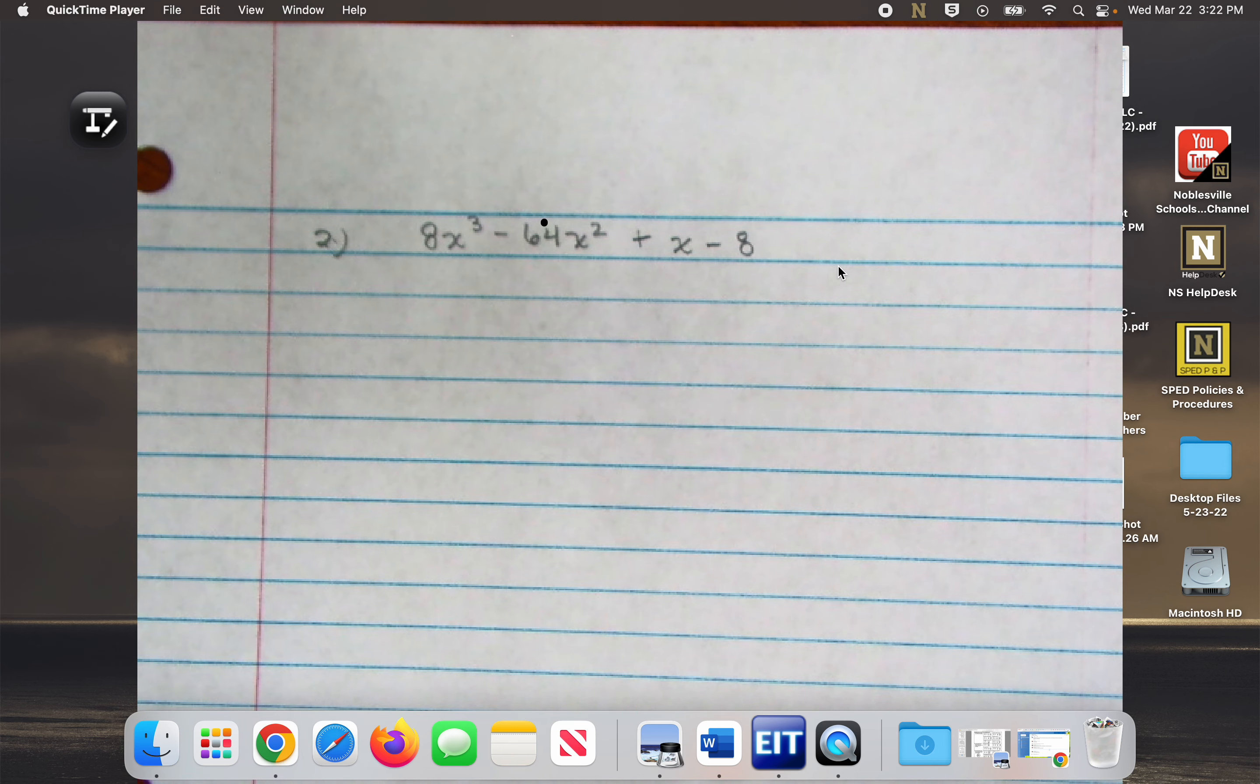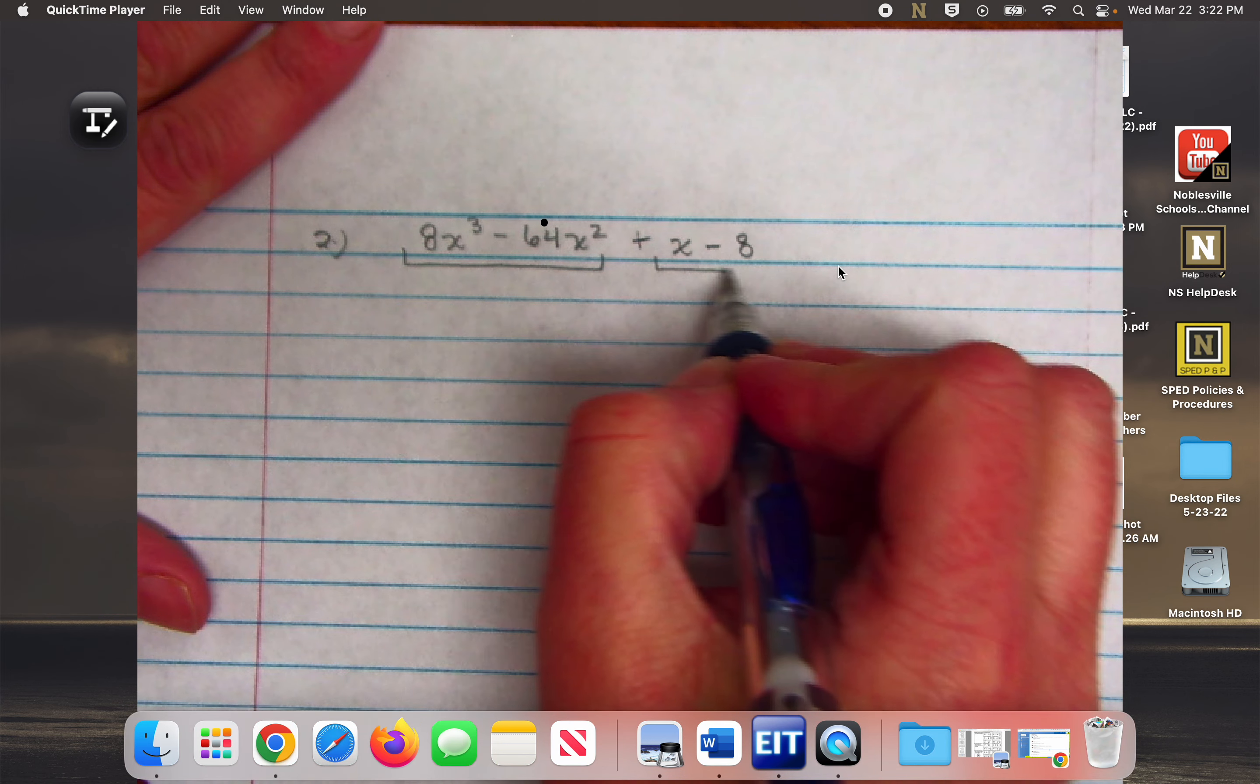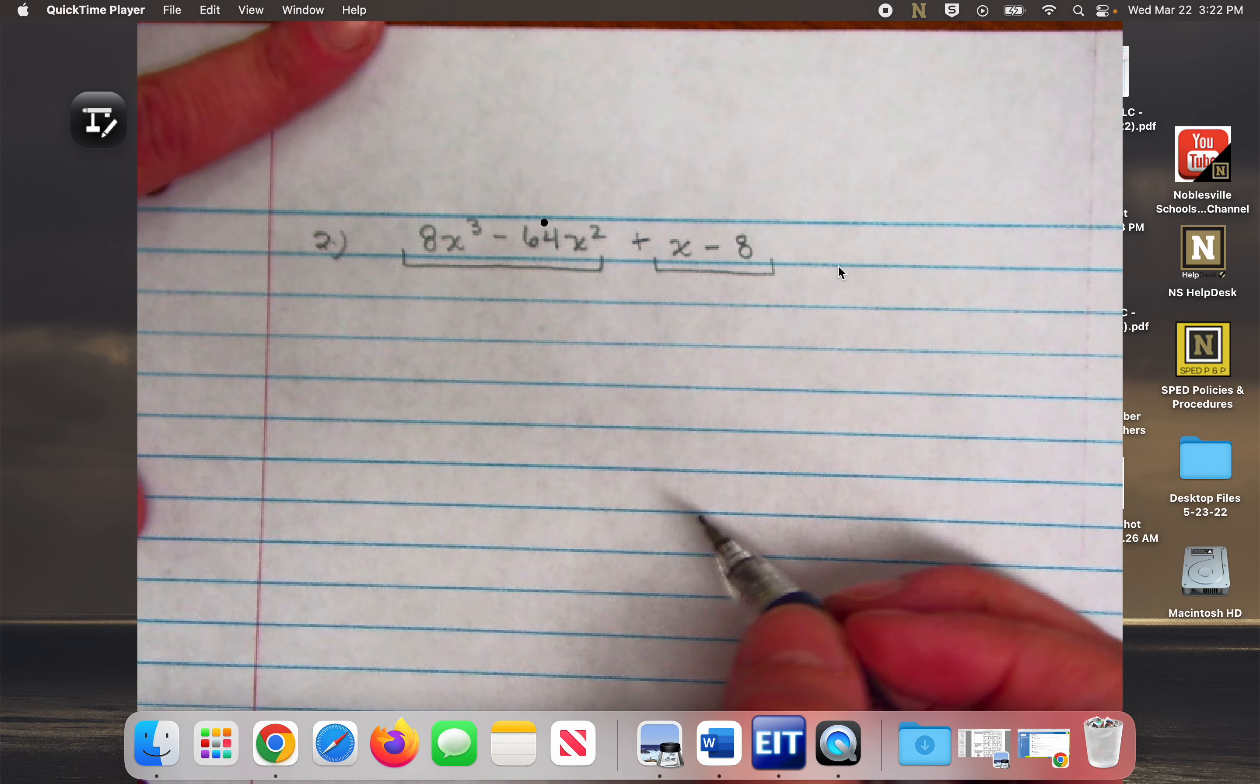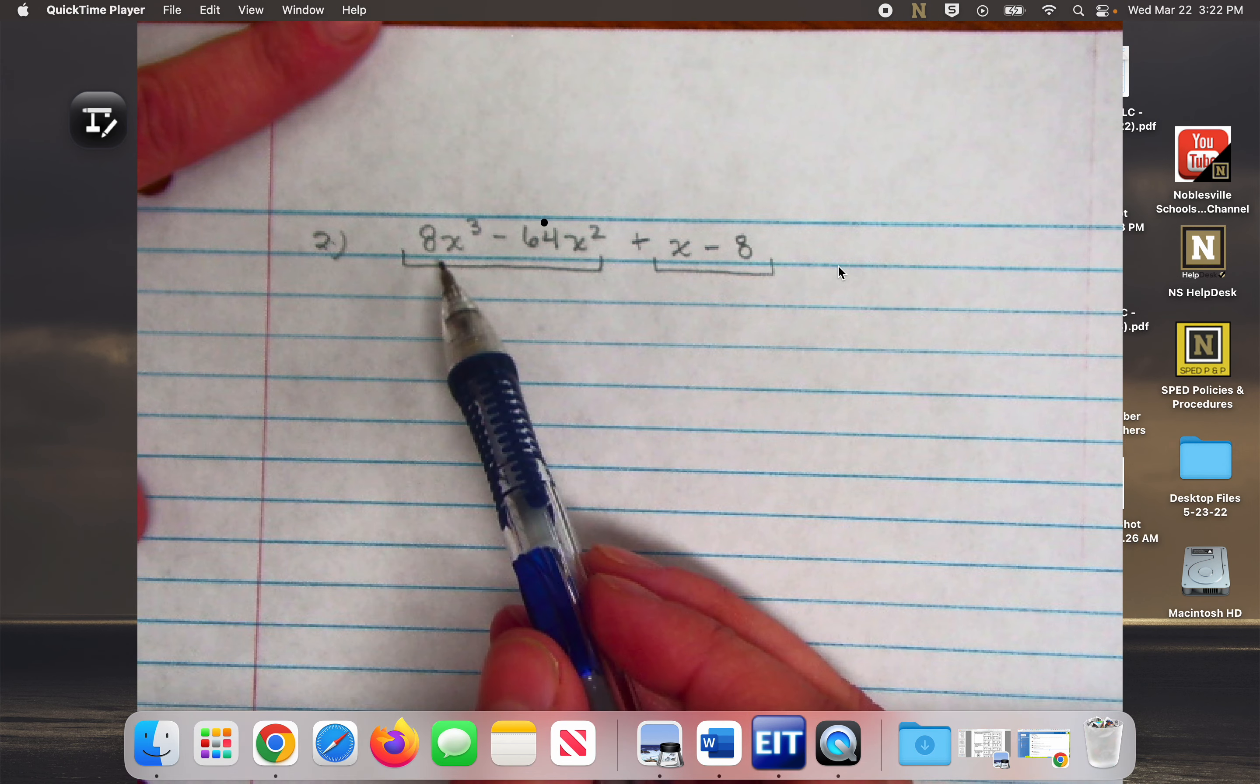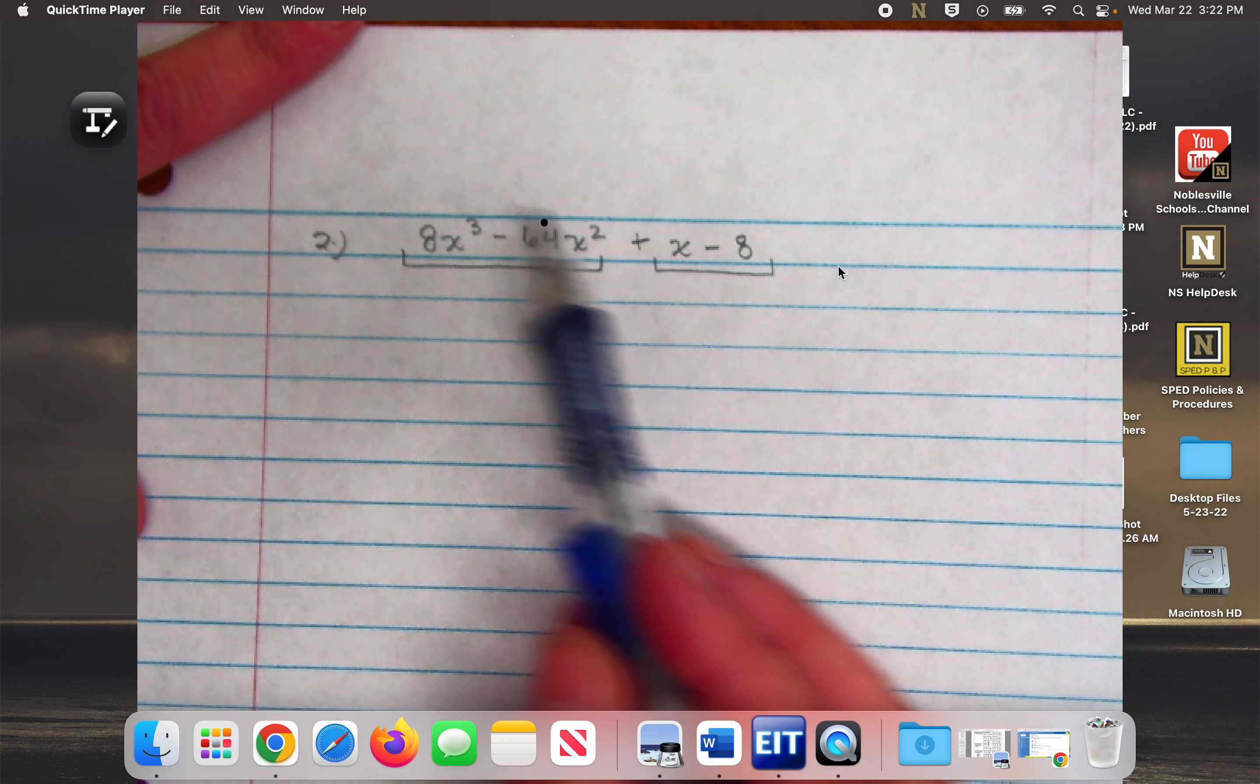Remember step one is to put them into two groups. So then I'm going to look at this first group and say what is the greatest common factor of this first group?